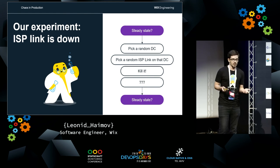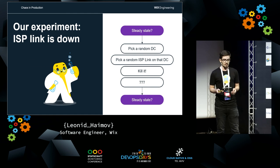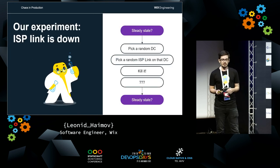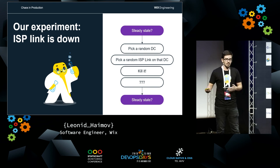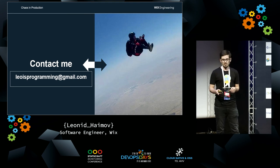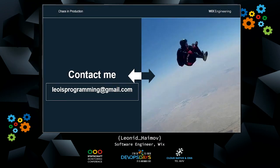Then our steady state runs again to make sure the failure didn't have any impact on users. In the rollback, we bring the ISP link back up. Using this experiment, we found out a lot of issues in the system, resolved them, and now our system is much much stronger. If you're interested in chaos engineering and want more details, my email is usprogramming@gmail.com. Thank you very much for watching.